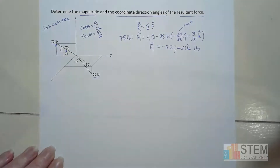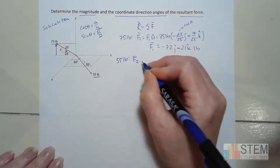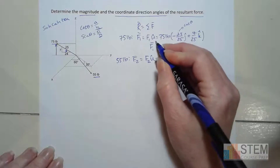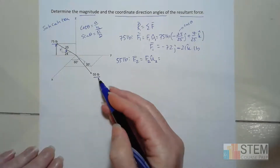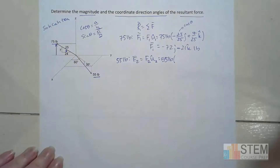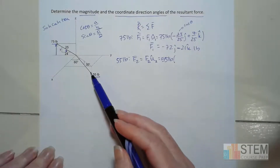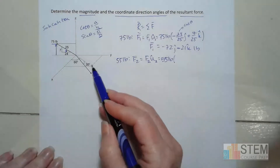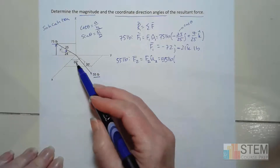Now we have one force vector. Let's go to the second one — F2. Same idea: magnitude of F2 times the unit vector. Magnitude is 55 pounds. For the unit vector, I'm given two angles because this force is dropped down 30 degrees below the XY plane. You can see this square-looking shape representing the XY plane — we're dropping down 30 degrees, so I've got to have both angles to get my components.